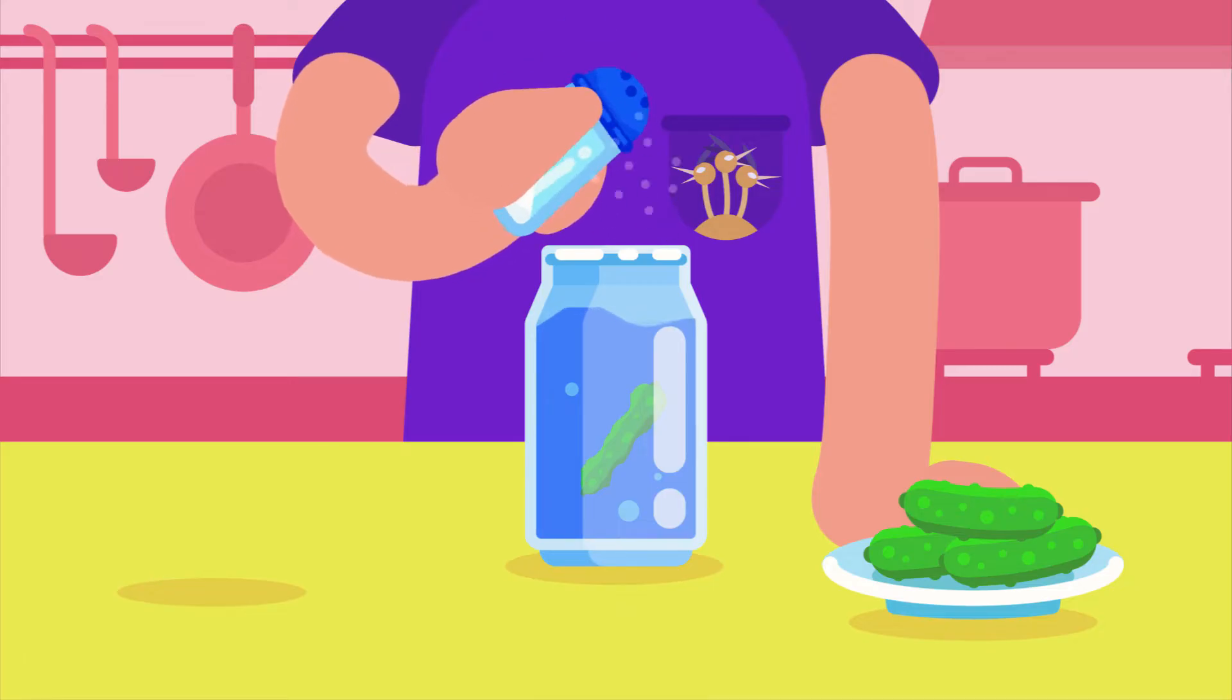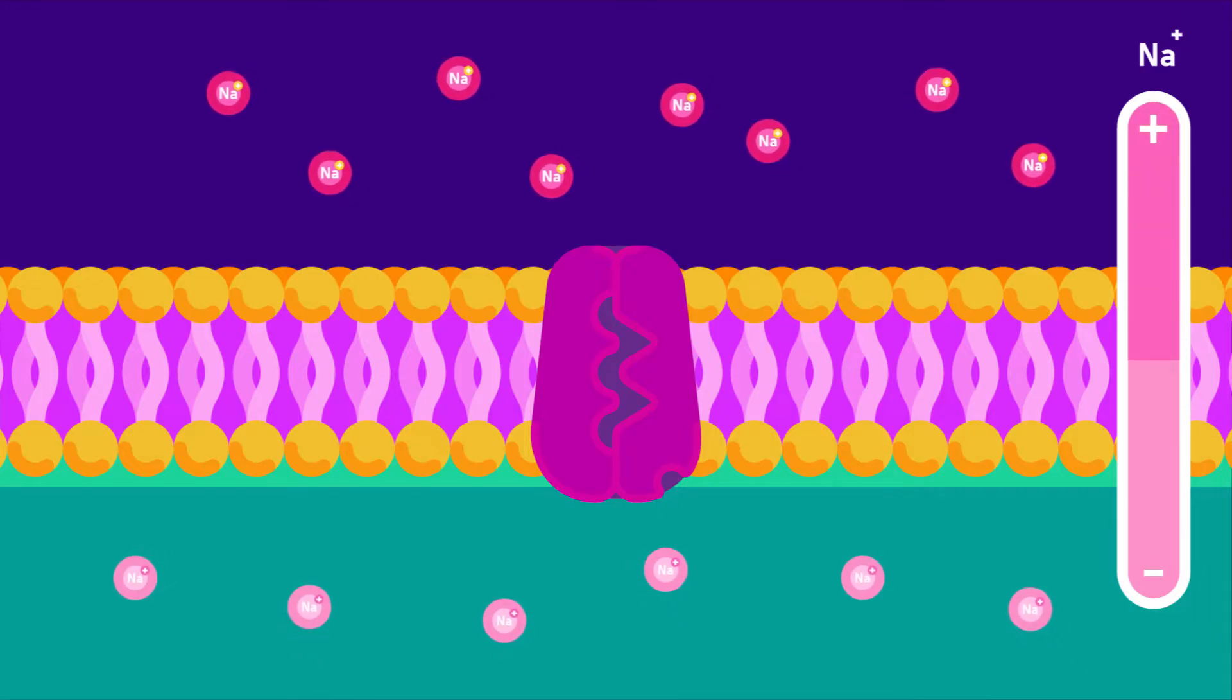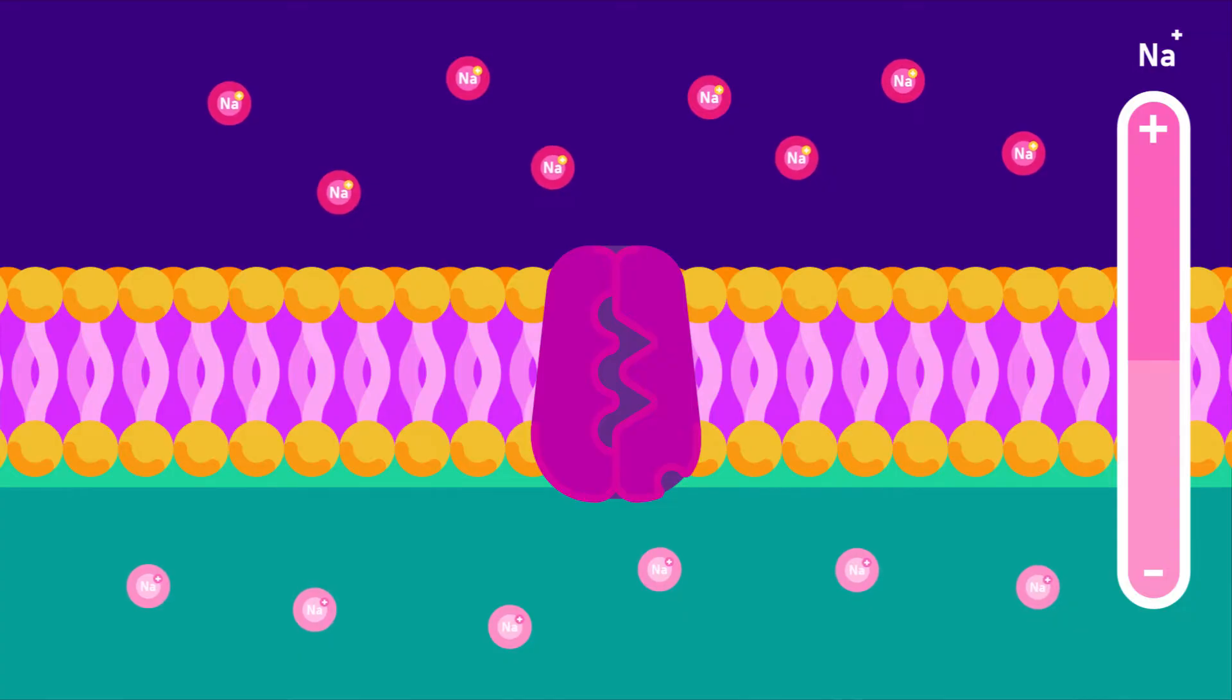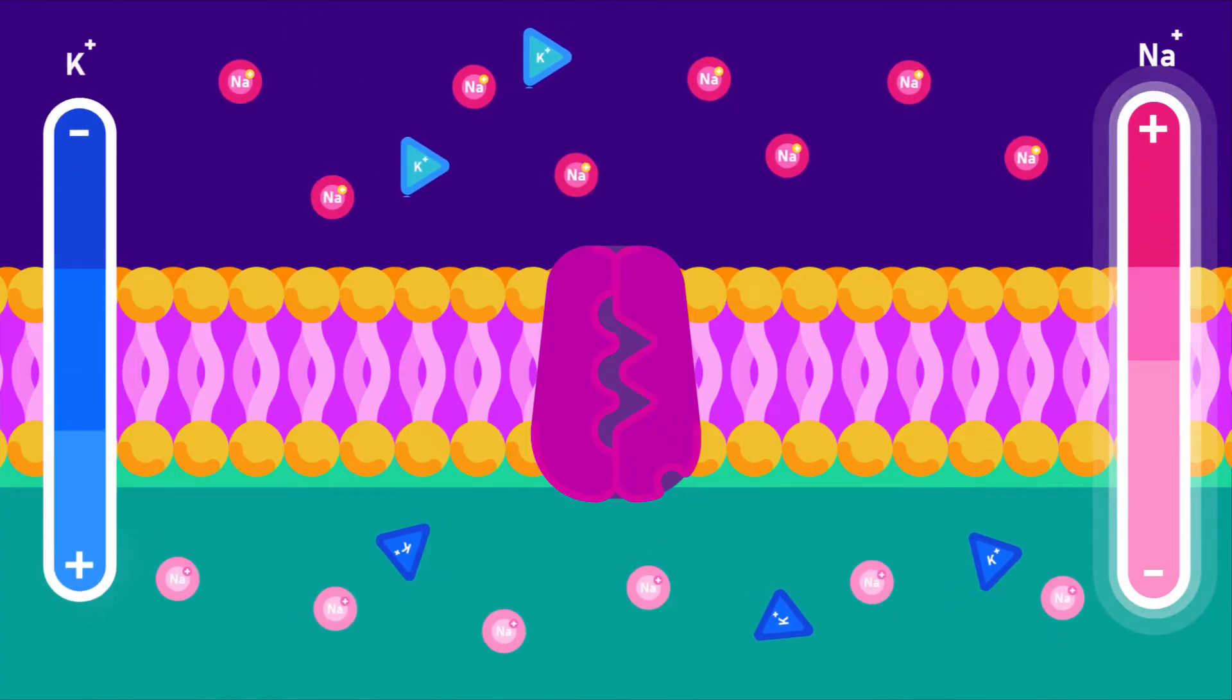We have covered active transport in our other video, but let's refresh. Sometimes living cells can absorb certain substances even though the concentration of the substances is higher inside the cell than their environment outside. That means it's against the concentration gradient.